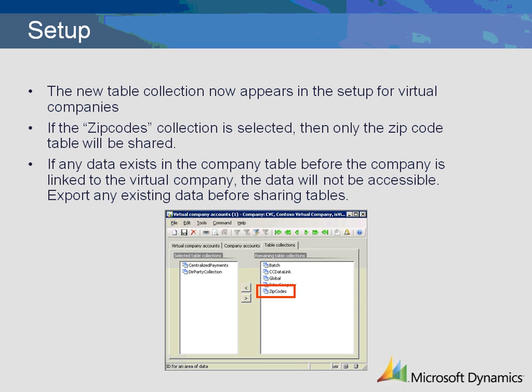The new table collection now appears in the Microsoft Dynamics AX setup for virtual companies. If the zip codes collection is selected, then only the zip code table will be shared. If any data exists in the company table before the company is linked to the virtual company, the data will not be accessible. Be sure to export any existing data before sharing tables.